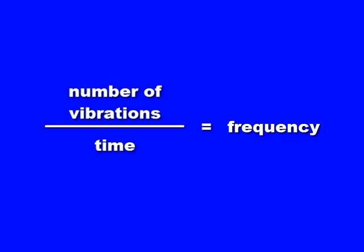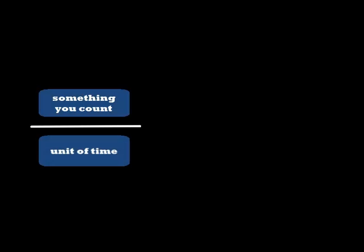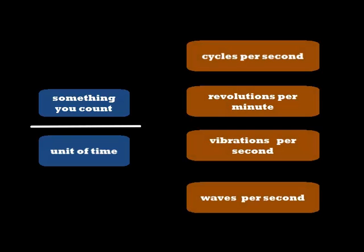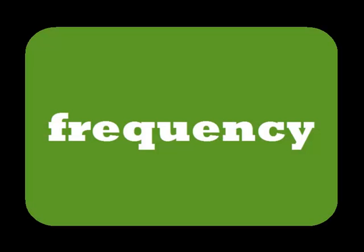The number of vibrations a wave makes in a unit of time is called the wave's frequency. Units of frequency can be anything you count divided by a time. For example, cycles per second, revolutions per minute, vibrations per second, or waves per second. All these units mean the same thing, frequency.